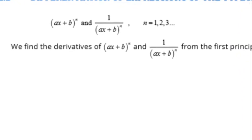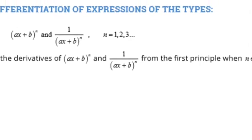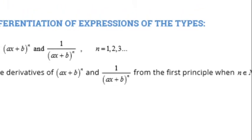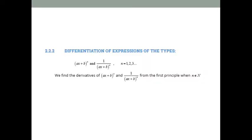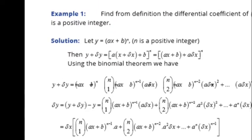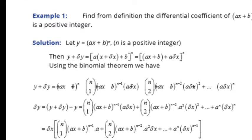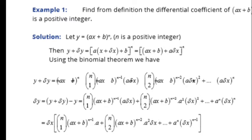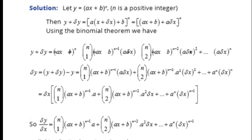Now we start. Let y equal (ax + b)^n. We replace x by x + δx and y by y + δy. Then we apply the binomial theorem.